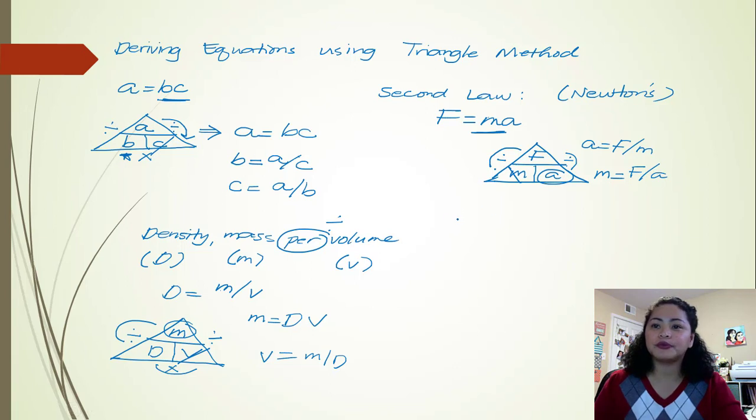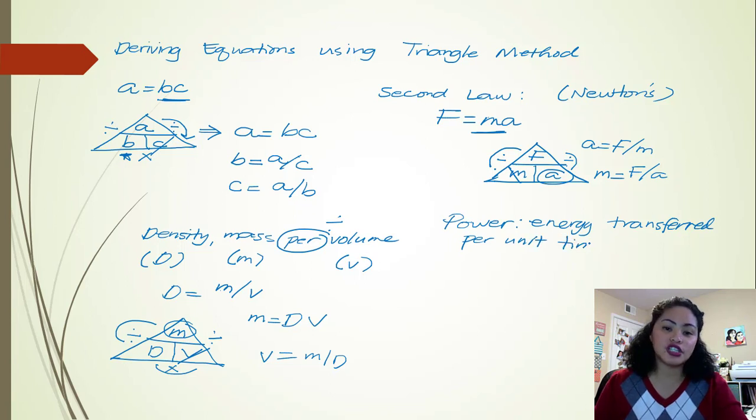Let's have one more example, which is power. And power is defined as the energy transferred per unit time. So we are given the definition, but how can we write the equation based on the definition? So we're just going to put P for power. And then it says here per unit time. That means time is the divisor. And then energy transferred. What is energy transferred?